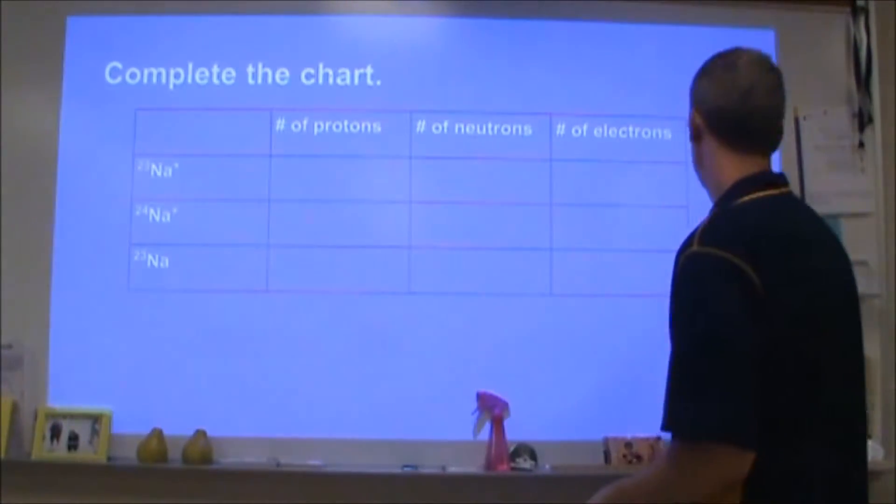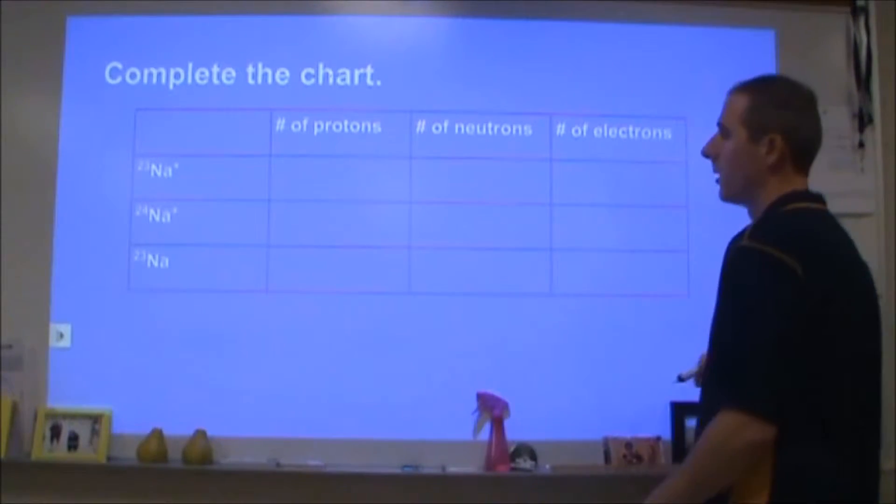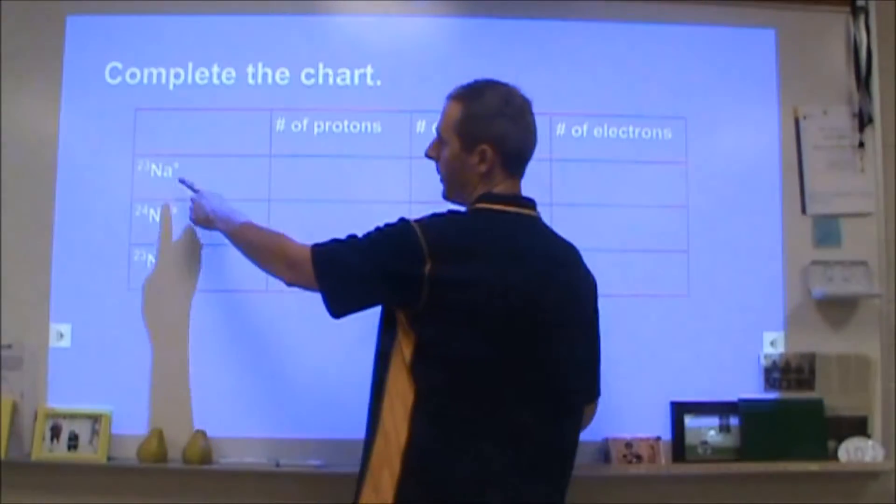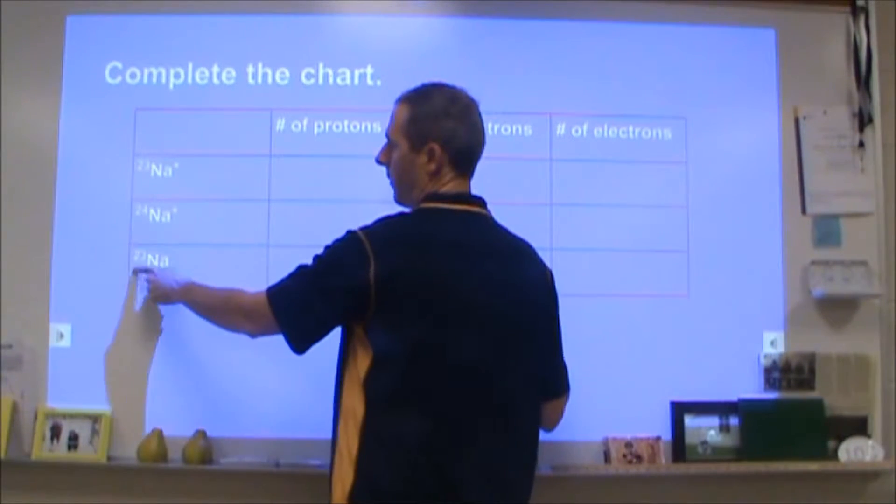So the first problem asks us to complete this chart, very simple. We have a sodium ion, sodium ion, sodium atom, with mass numbers 23, 24, and 23.